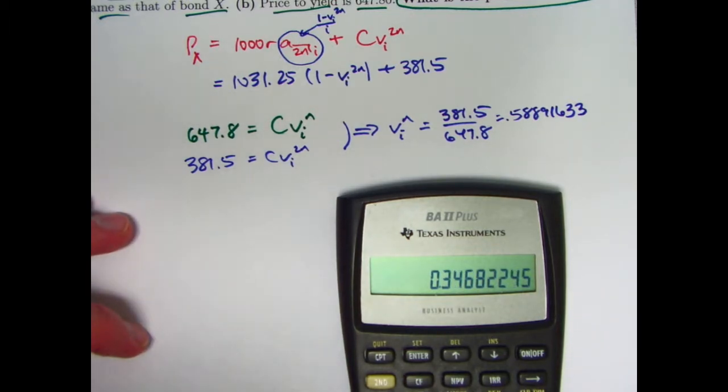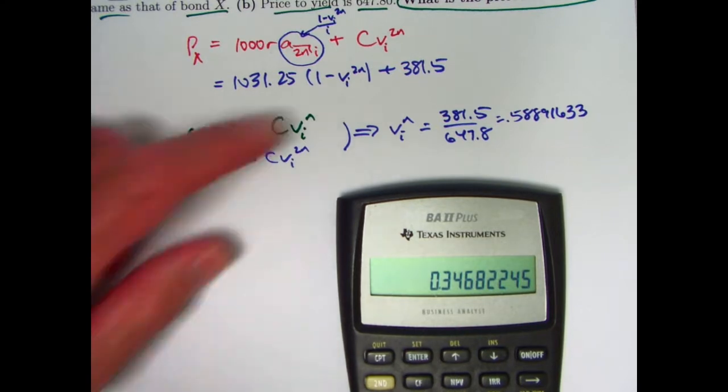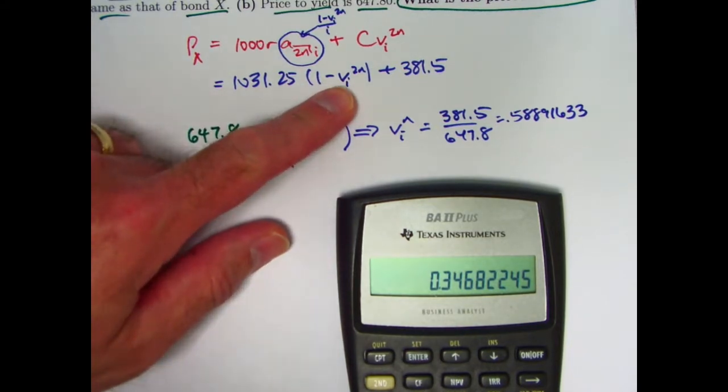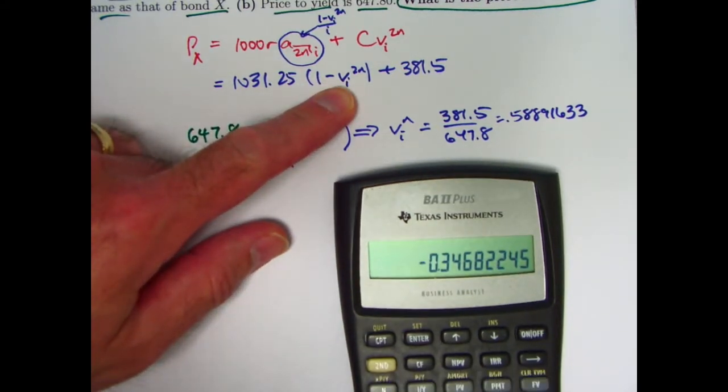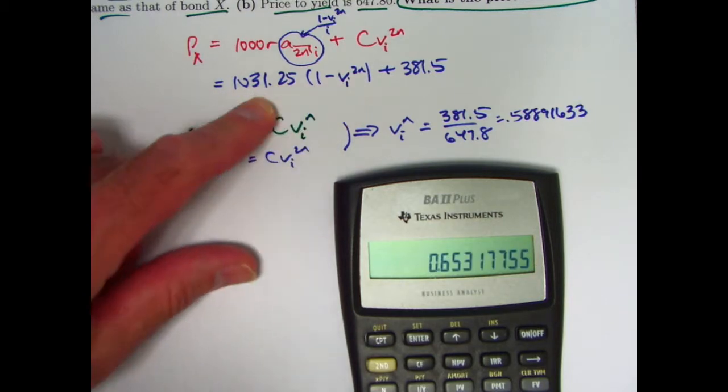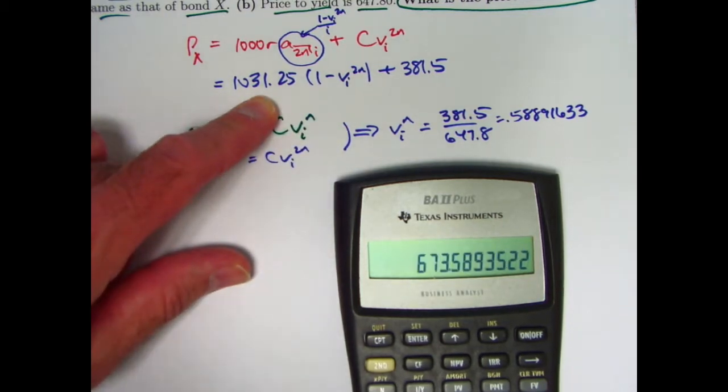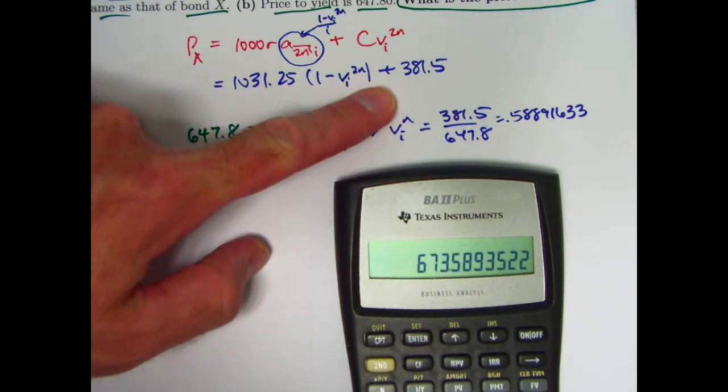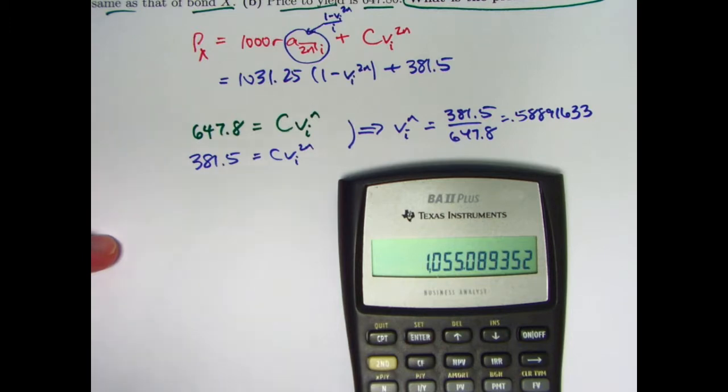Square this to get V^I to the 2N, that value right there. Subtract that from 1, multiply by 1031.25, and then add 381.5. The final answer is about 1055.